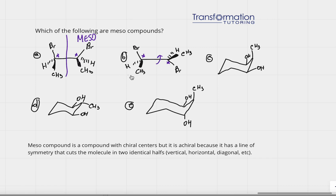When I rotate, I keep the left side the same — bromine, hydrogen, methyl — and flip the right side. The bromine that was going down now goes up. There is a key trick: when you flip the chiral center by rotating around the single bond, you must switch the stereochemistry of the other substituents. Here the hydrogen and methyl were dash and wedge, so after rotation they become the opposite — my methyl becomes a dash.